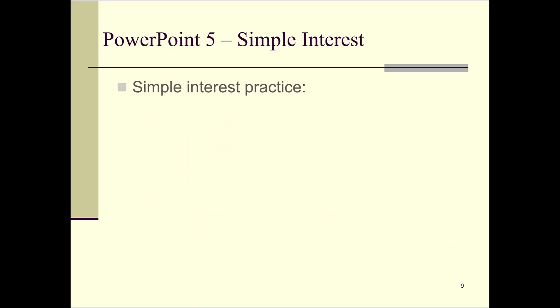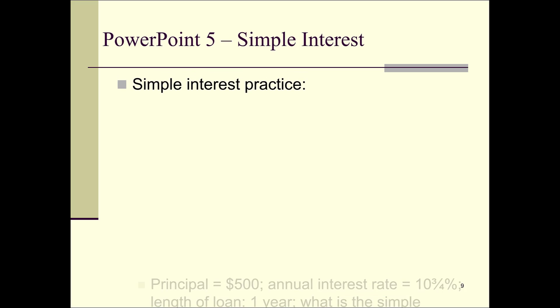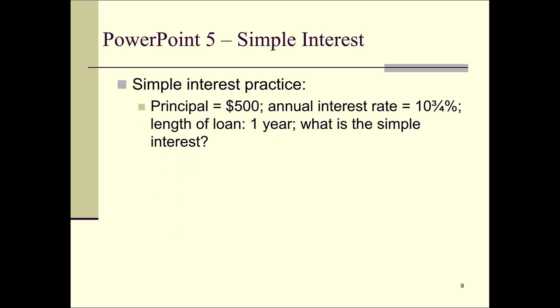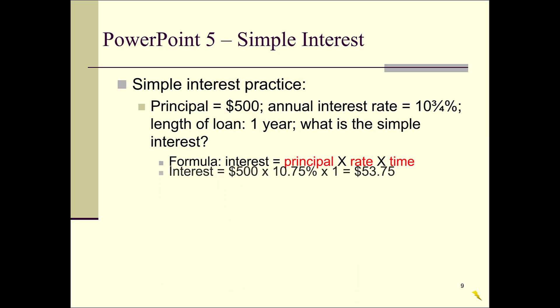Let's do some simple interest practice. The principal is $500, the annual interest rate is 10.75%, and the length of the loan is one year. Using the formula — principal times rate times time — we get 500 times 10.75% times 1. Using your calculator, you should get $53.75.